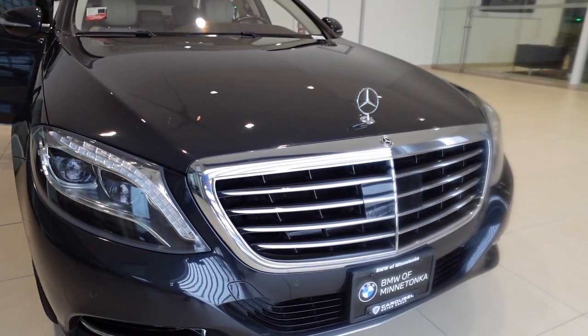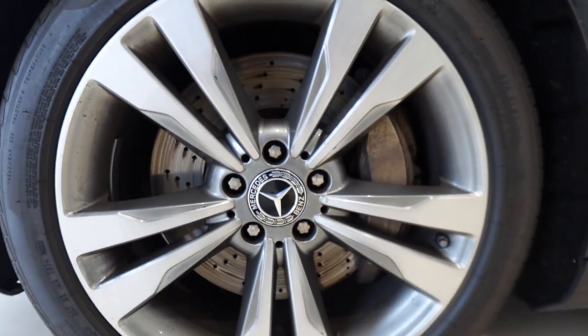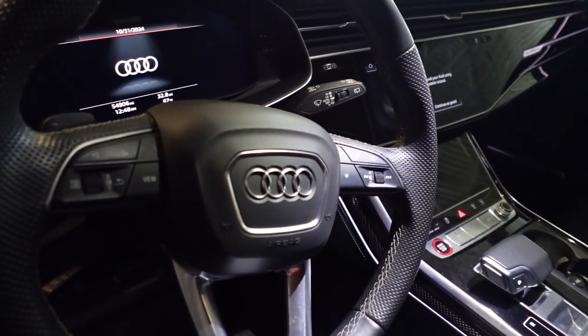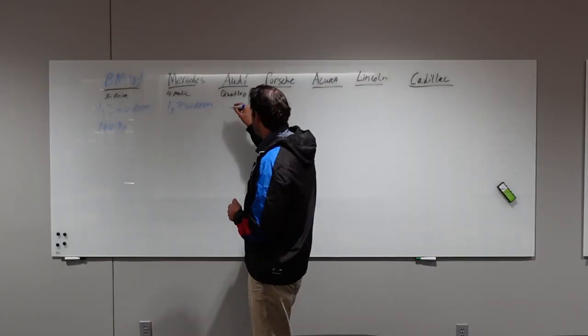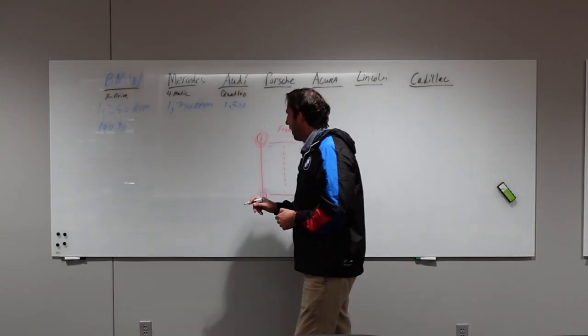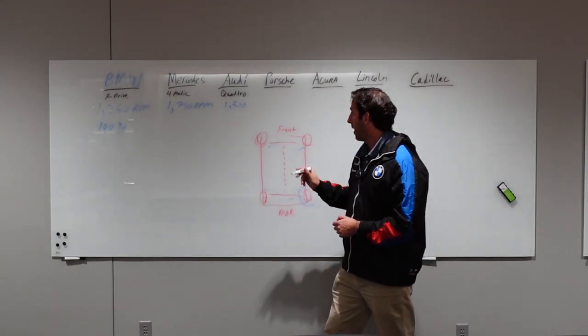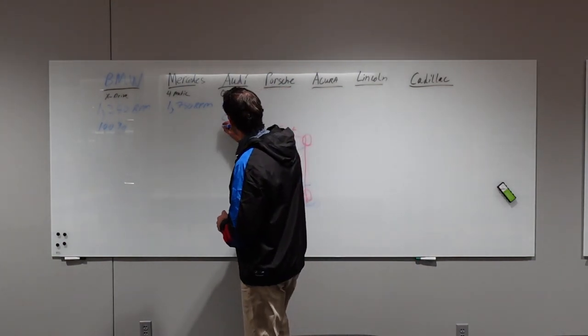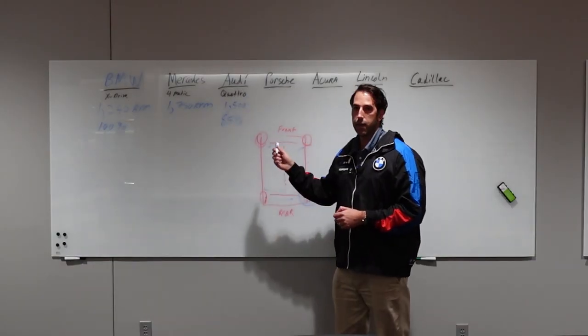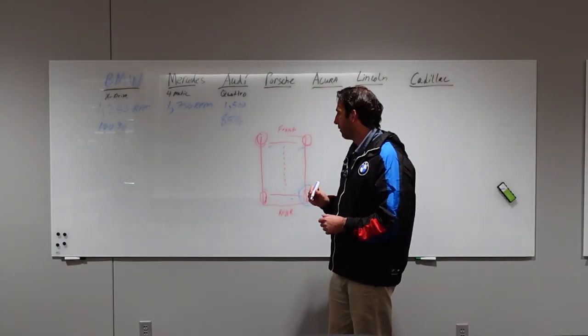Mercedes, the 4MATIC system is going to be more delayed. That will start sending torque at 1750 rpm. Quattro is a really great system. It's still going to be more delayed than BMW. It's going to start sending torque at about 1500 rpm. And versus BMW where it can send 100% of the torque to the back axle, the Audi Quattro system is going to be able to send 85%, so 15% less than the xDrive system.